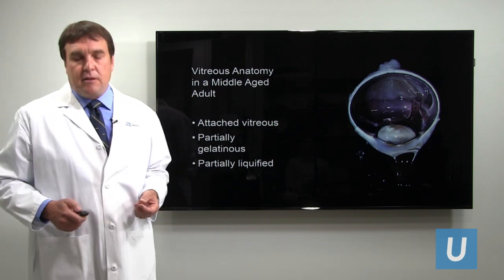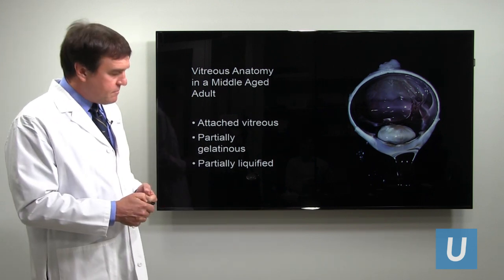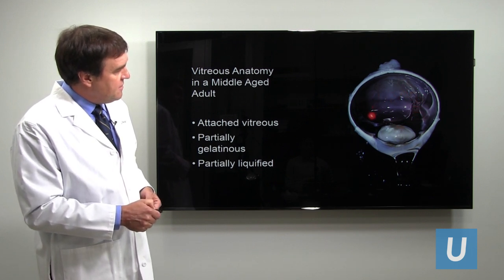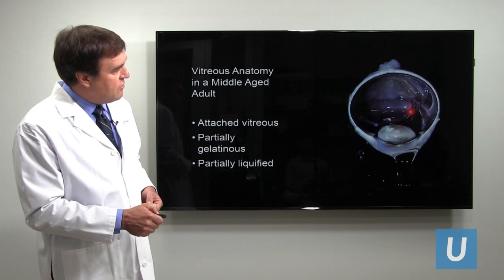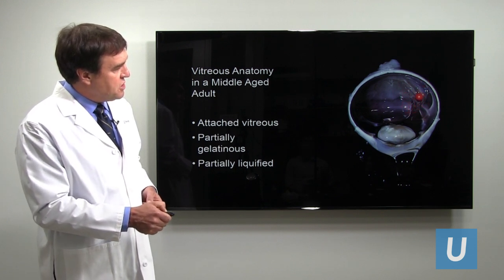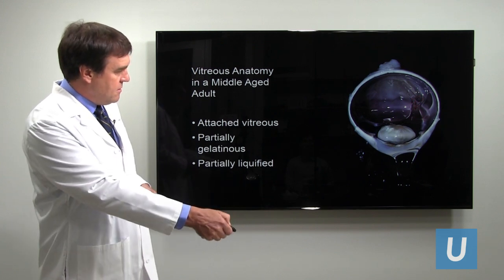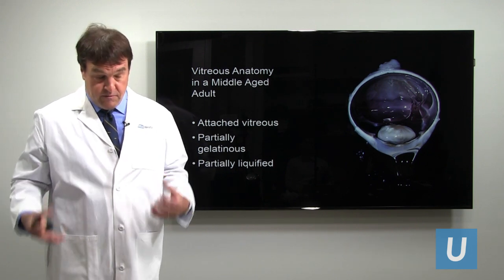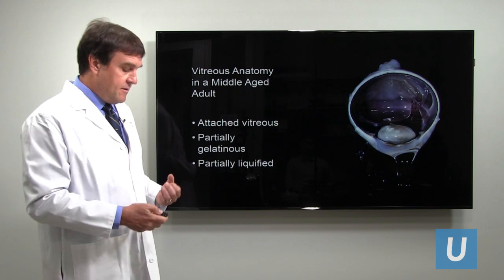In a middle-aged adult, the vitreous has very different characteristics. The vitreous is partially liquefied — you can see areas that are hollowed out, while parts are still formed in a gelatinous fashion like in the previous picture. The drip down here is now much longer and goes much further down because the vitreous is much more liquefied in a middle-aged adult.